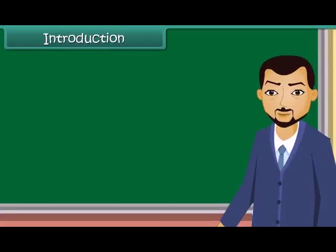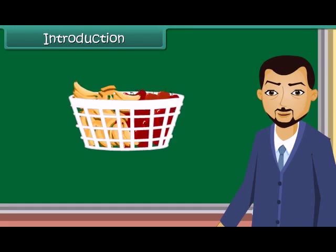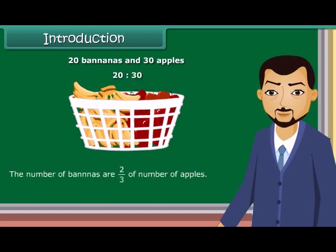Introduction: Ratio means comparing two quantities. A basket has two types of fruits — 20 bananas and 30 apples. The ratio of the number of bananas to the number of apples is equal to 20 is to 30. The number of bananas are 2 upon 3 of the number of apples. In terms of ratio, this is written and read as 2 is to 3.